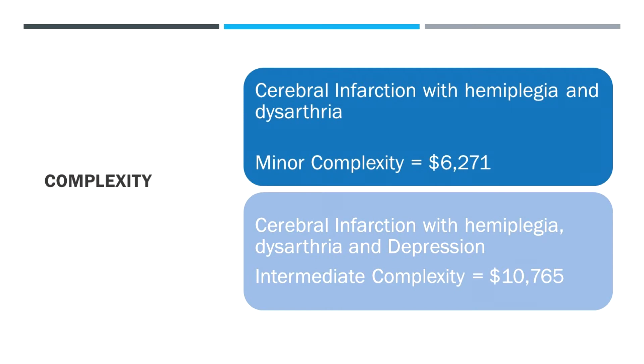Here's a stroke example — a cerebral infarction with hemiplegia and dysarthria. If we're thinking purely medically, that's going to come out with minor complexity, which is still a bit over six thousand dollars in activity-based funding. But if we have the same presentation and recognize that it has led the person to be depressed as a new condition — which we'll manage potentially with an SSRI or similar pharmacotherapy and perhaps some psychological interventions — that increases to intermediate complexity and adds over four thousand dollars of additional funding. If we recognize these elements more, that funding could be used to build better psychological services for inpatients or a more comprehensive psychiatric liaison team.